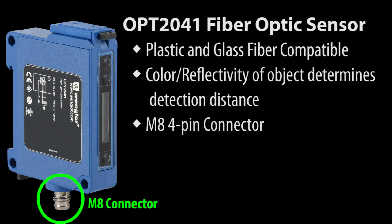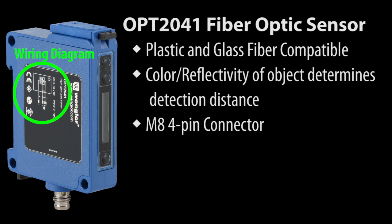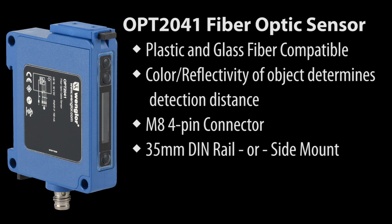There are four connections via this M8 connector: supply, signal out, and contamination out. AutomationDirect does have cables that work with this M8 connector. You can mount it via 35mm DIN rail or side mount via these screw holes.